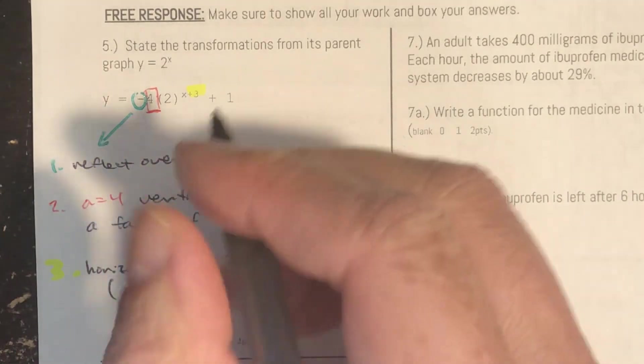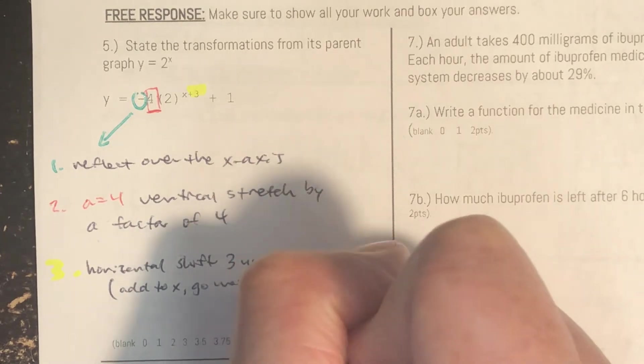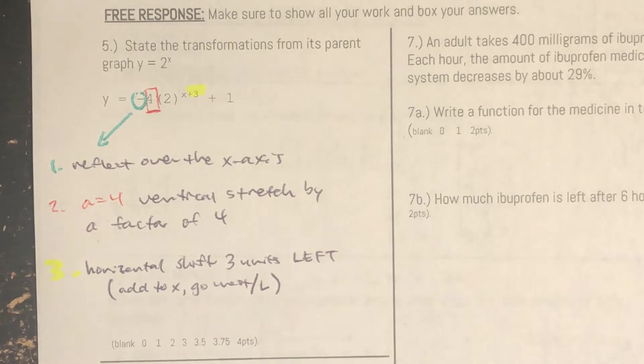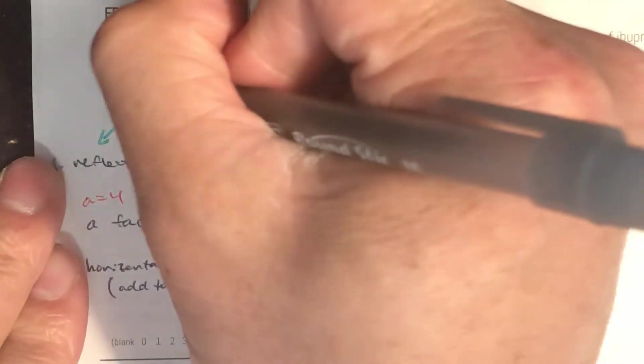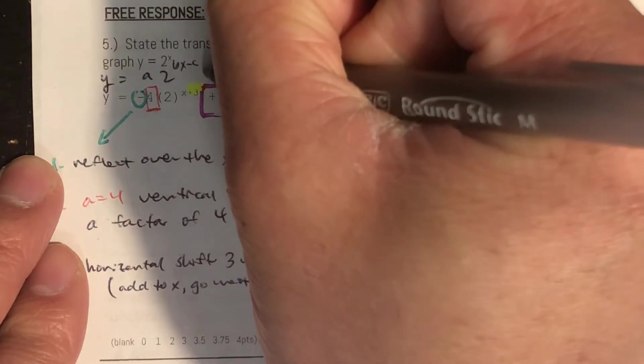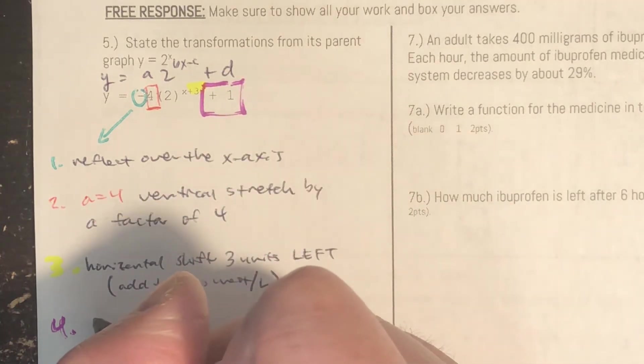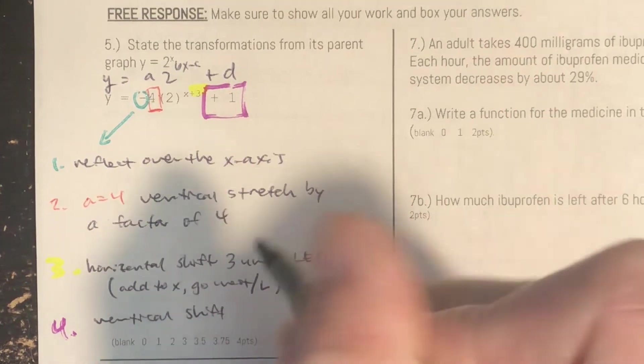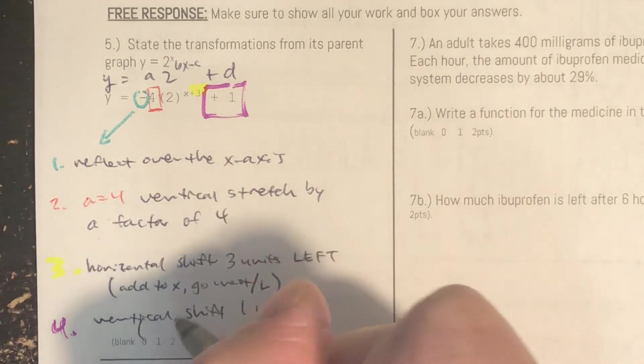And I have a silly phrase that can help you: add to x go west. West is left. And then the last one is your d value. So if you need to you can always write these right above it: a, 2 to the b times x minus c plus d, something like that. And there's your letters. And then the d value is a vertical shift one unit up.